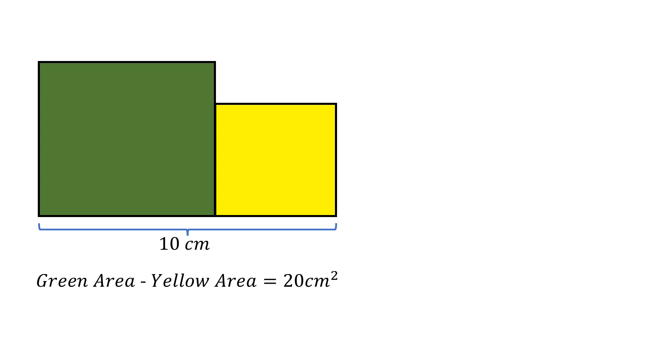Let's begin to solve the question. Let the side of the green square be A and the side of the yellow square be B. Then the green area is A² and the yellow area is B², and the total width is A plus B.